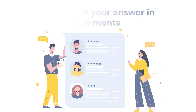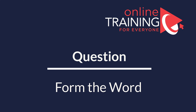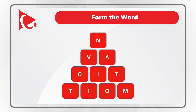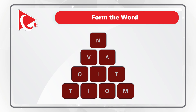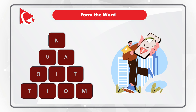Thanks for participating and good luck. One of the very hard challenges is forming words using a certain number of letters of the English alphabet. In this question, you are presented with 10 letters, and you need to form the word using all the letters only once. The letters are N, V, A, O, I, T, T, I, O, M. Do you see the word? Give yourself maybe 20 to 30 seconds.